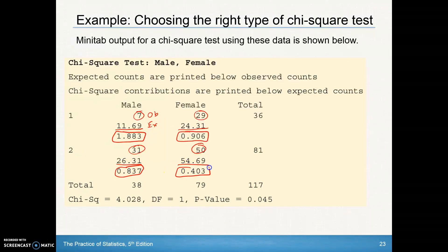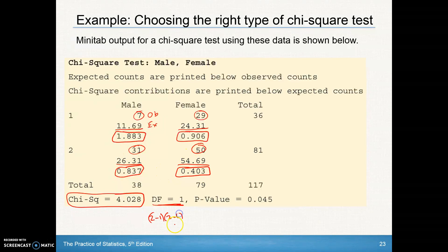We add all those individual components together for our total chi-square of 4.028. Degrees of freedom are calculated by rows minus one times columns minus one — two rows gives two minus one, two columns gives two minus one, so one times one equals one degree of freedom. The p-value can be found using Table C or the calculator, and we'll show how to do that in class. There are also videos at the top of the chapter on Launchpad.